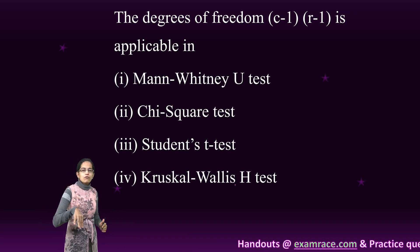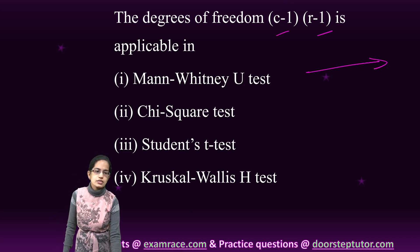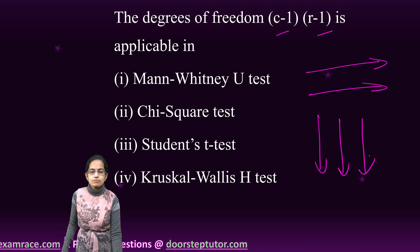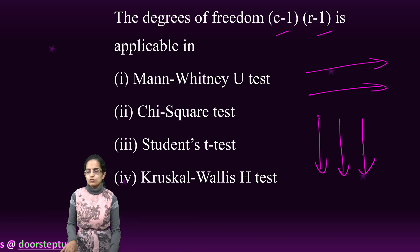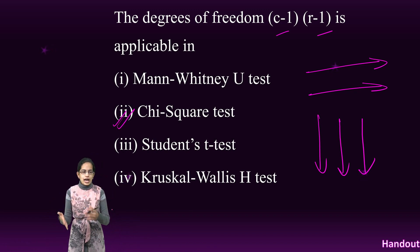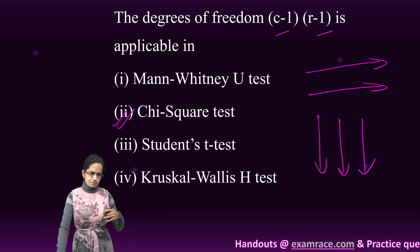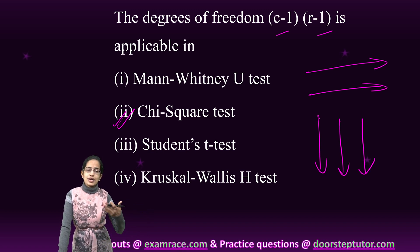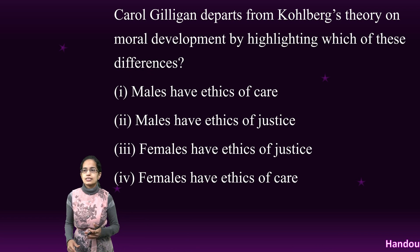Regarding degree of freedom: column minus one and row minus one — the horizontal ones are rows and the vertical ones are columns. The product of (column minus one) and (row minus one) gives the degree of freedom in the case of the chi-square test. Chi-square test is used to evaluate independence, and degree of freedom helps evaluate the independence for that test.